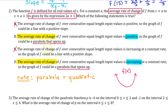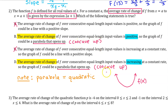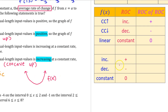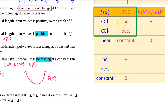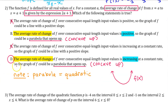Both remaining options say that f of x could be a parabola that opens up — in other words, f of x is concave up. The question is: under what circumstances will a function be concave up? Is it when the average rate of change is positive, or when it is increasing? f of x will be concave up when the average rate of change is increasing, not when it is positive. That's why the answer is D — the graph of f could be a parabola that opens up, i.e., concave up.